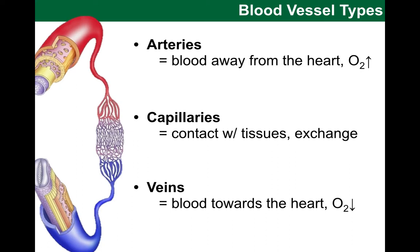Then we have capillaries. These are vessels with a small diameter and in close contact with the body tissues, so an exchange of gases — oxygen and carbon dioxide — nutrients, waste products, and hormones is easy and efficient here. When this exchange has taken place, the blood returns back to the heart via veins, which carry blood that is typically deoxygenated.